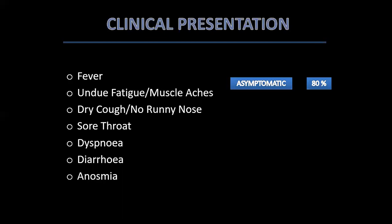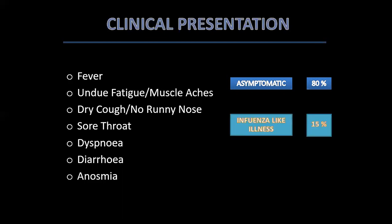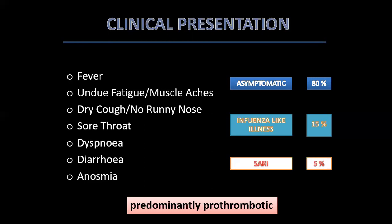It is interesting to note that 80% of those infected remain asymptomatic or only mildly symptomatic. About 15% will have a severe influenza-like illness, necessitating hospitalization and possibly oxygen supplementation. Only about 5% will have severe acute respiratory infections requiring critical care, mechanical ventilation, and supportive treatment. It is this subset of approximately 5% that are intensely pro-thrombotic, which calls for instituting anticoagulation from day one.